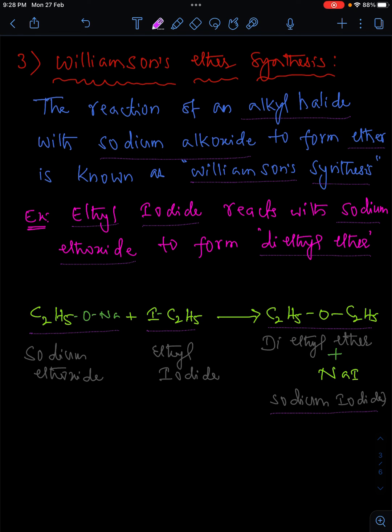Here I have taken sodium ethoxide which is treated with ethyl iodide, then we'll get diethyl ether along with sodium iodide. So these are the three very important questions from alcohols, phenols and ethers. Thank you.